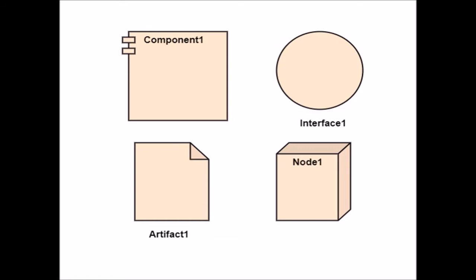The different symbols or notations used in a deployment diagram are: first, a component; second, an artifact; third, an interface; and fourth, a node.